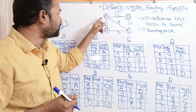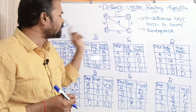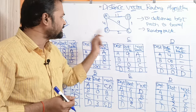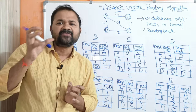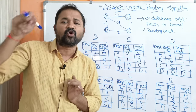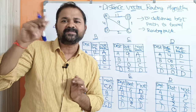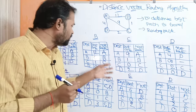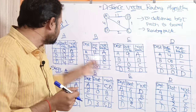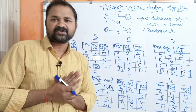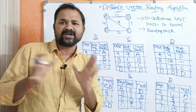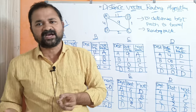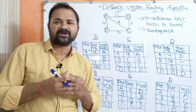Let us see this example. Here we have four routers: A, B, C, and D. Maximum, we require 4 minus 1, that is 3 steps. In this problem we will get the solution in 2 steps only, so there is no need for a third step. Even if we write step 3, it will be similar to step 2.